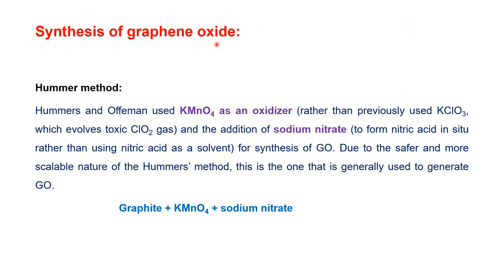The most suitable method for the synthesis of graphene oxide is the Hummer method. In this method, graphite powder is treated with potassium permanganate as an oxidizer. Previously, potassium chlorate was used, but it evolved toxic chlorine dioxide gas. It was replaced by potassium permanganate, and sodium nitrate is used as a source of nitric acid. Due to its safer and more scalable nature, the Hummer method is generally used to generate graphene oxide.